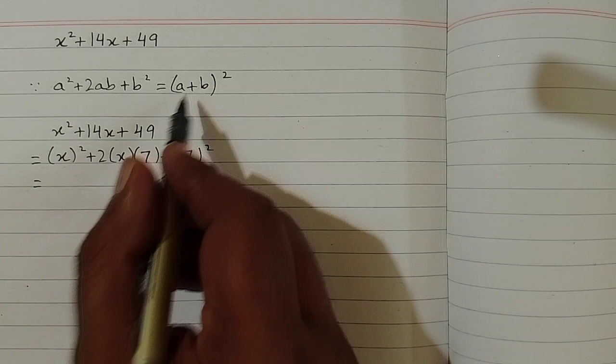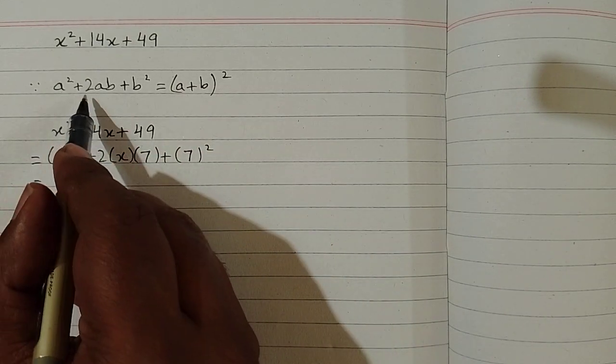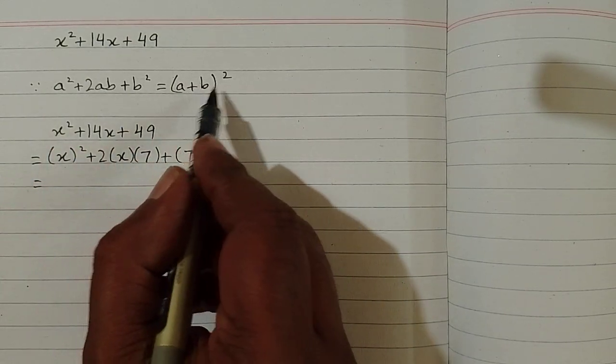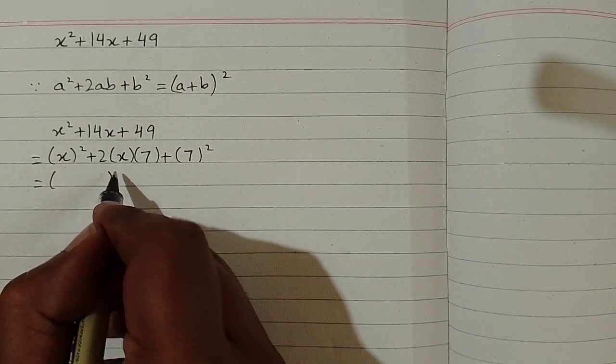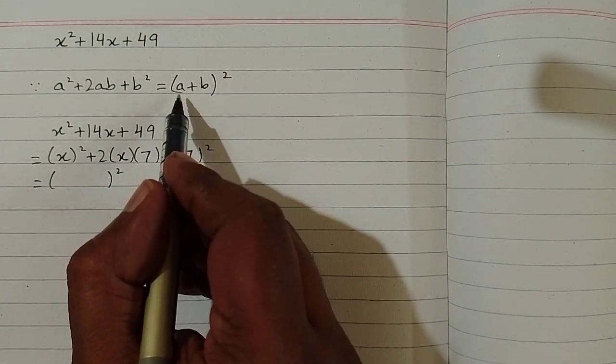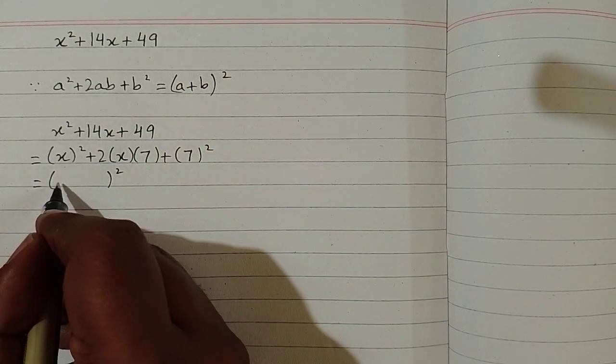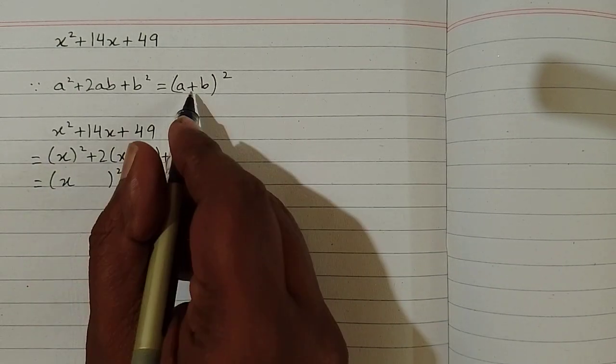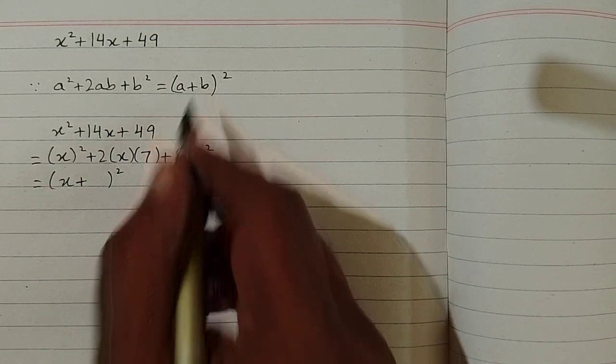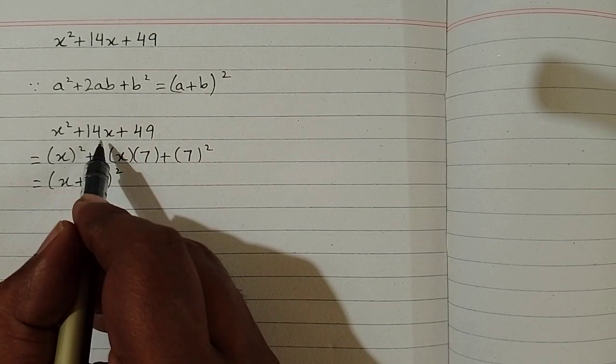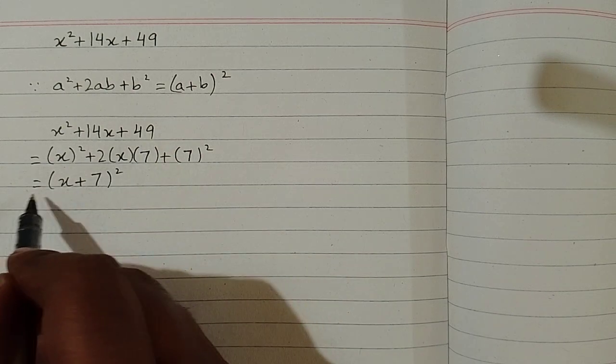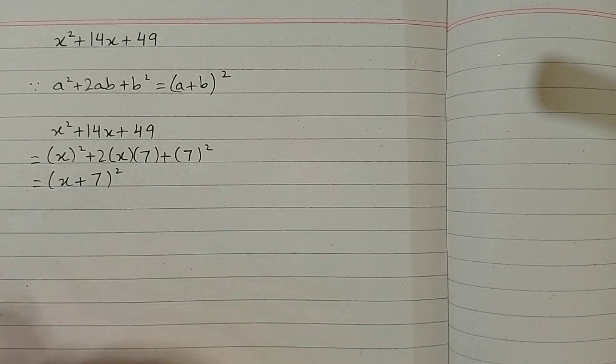Now we can apply this formula. So a² + 2ab + b² is equal to (a + b)². So this thing can be written as, first we can write x in place of a and then plus sign, and then we can write 7 in place of b. So x² + 14x + 49 is equal to (x + 7)².